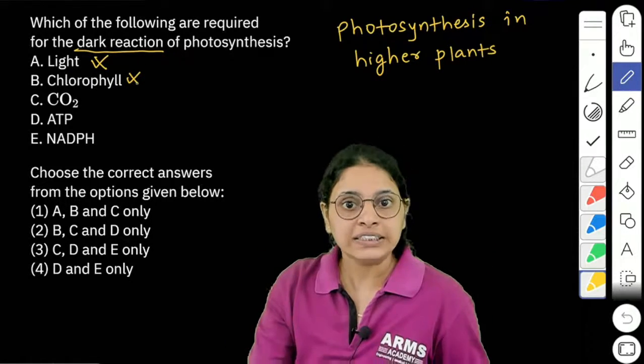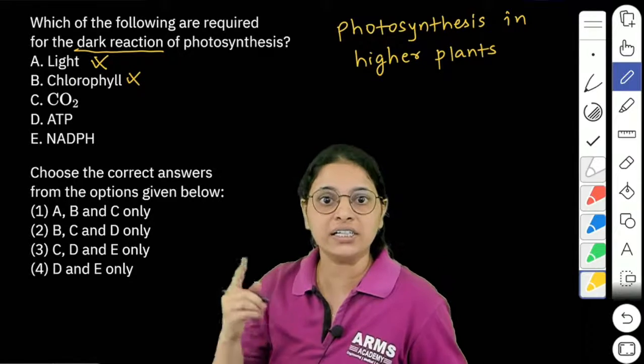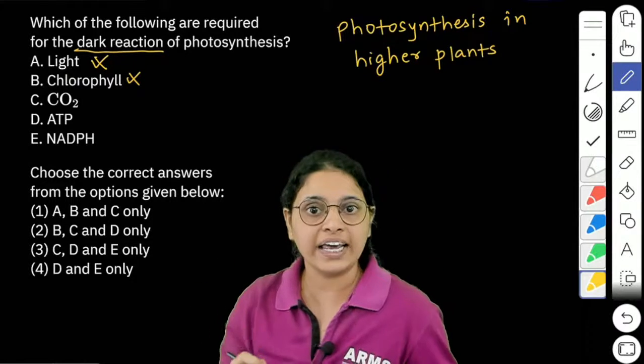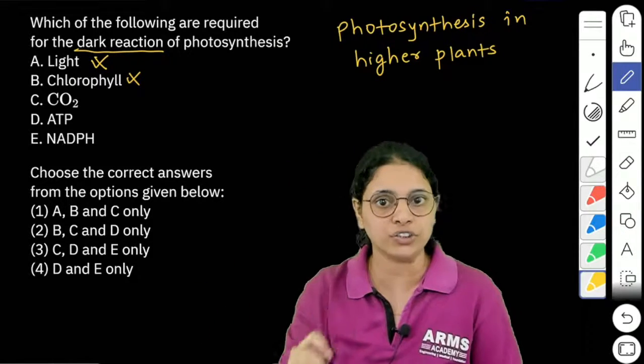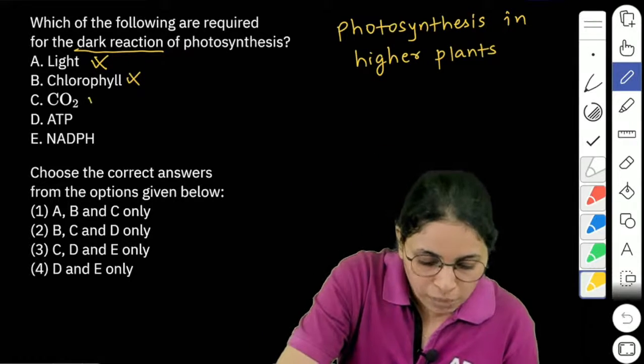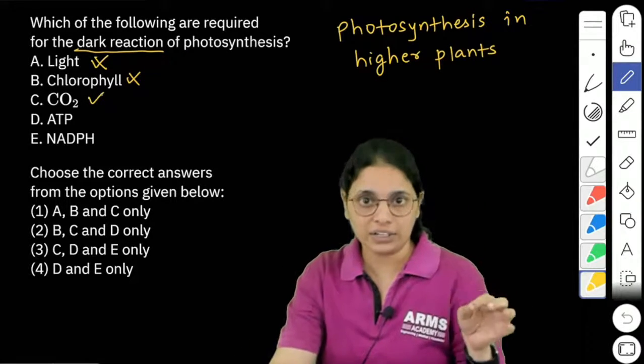Next, CO2. CO2 fixation and ultimately production of glucose takes place in the dark reactions of photosynthesis. And hence, CO2 will be used up during the dark reaction.